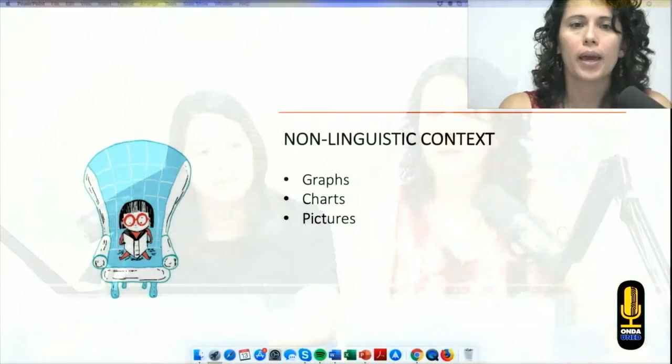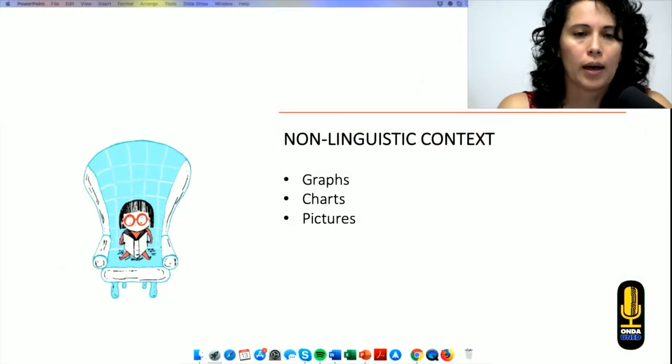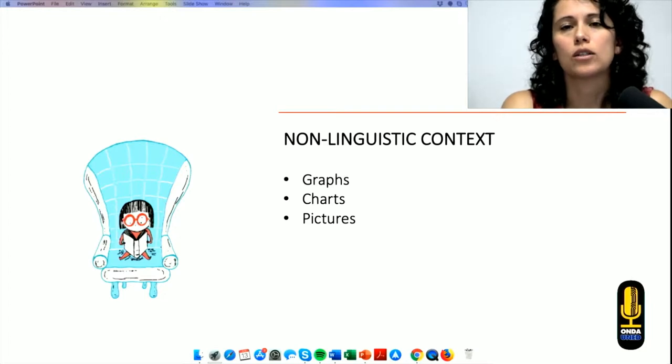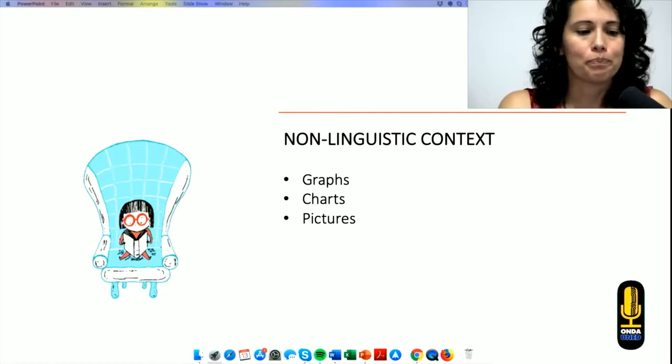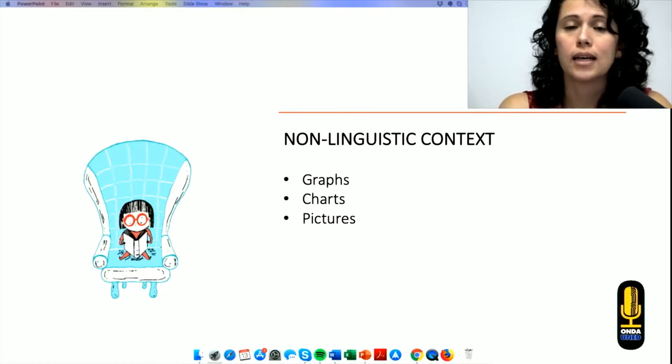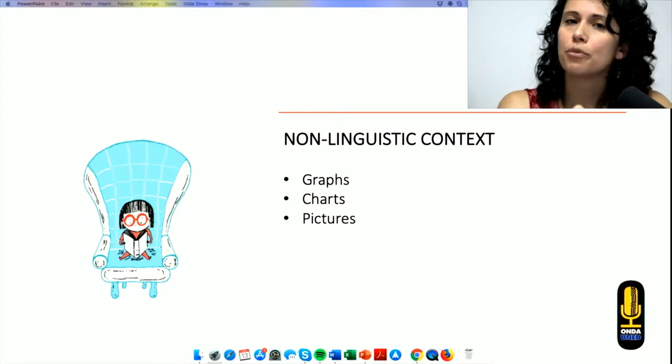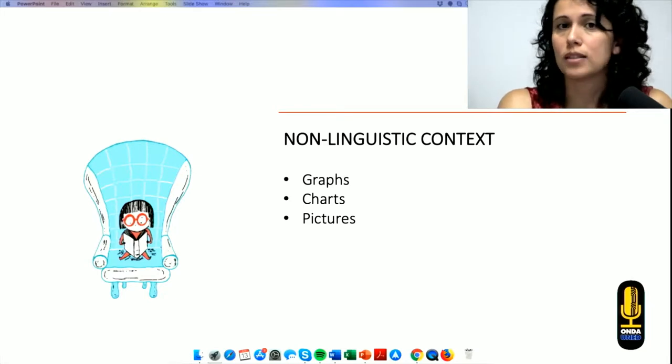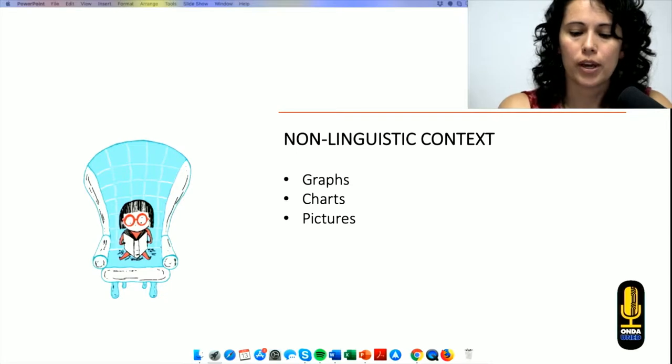Let's continue with the non-linguistic context. Something important and to be on the same page. When we're talking about text in the reading process, we have to make sure we don't think only in a written text. Text could be a picture, a graph, a chart, because you can extract information from it. So, that's basically reading.